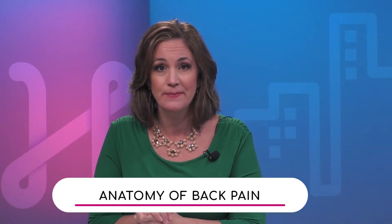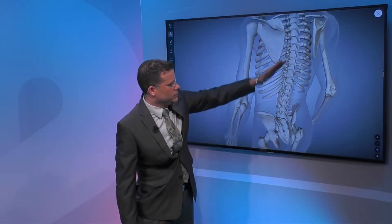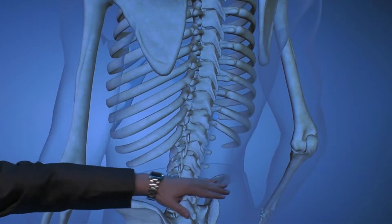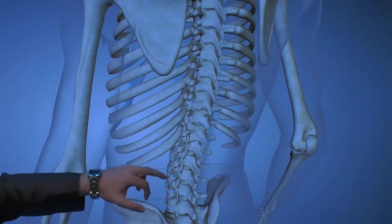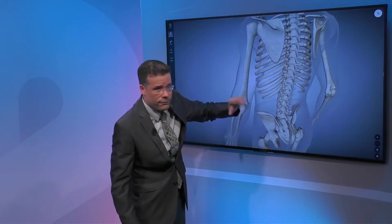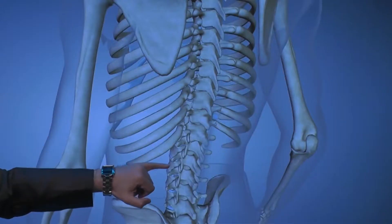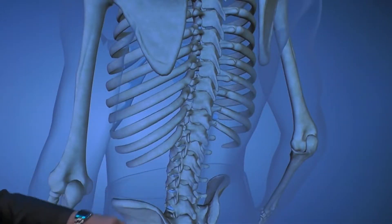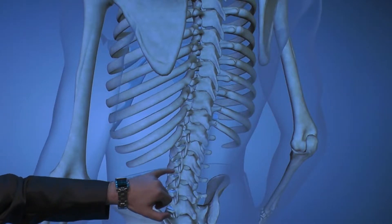So basically this is the lower back — this is the whole spine, and this is around the hip area here. We have the different segments in the lower back, five of them. We have the bones, which are the structures here, and in between the bones we have this soft tissue structure called a disc.